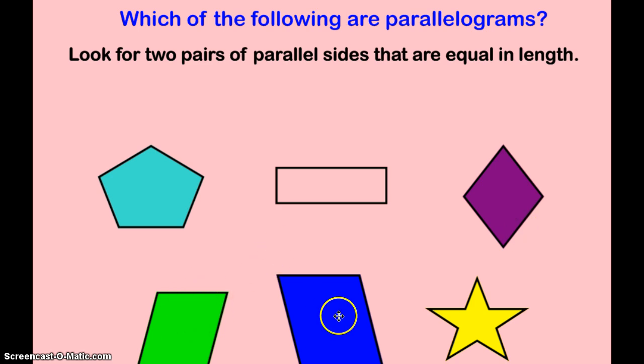This green and this blue down here are definitely parallelograms. They fit that rule exactly. The turquoise pentagon and the star are not considered parallelograms.